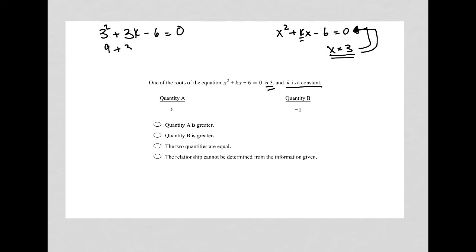This becomes 9 plus 3k minus 6 equals 0. And you can kind of see where this is going. 9 minus 6 is like term, so 9 minus 6 is 3. So 3 plus 3k equals 0.